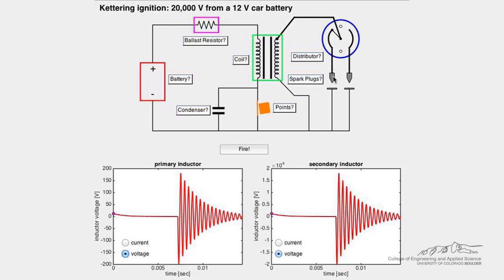This large voltage is what drives the spark across each one of the spark plugs. Click the fire button to animate the schematic and observe the voltage and current across the primary and secondary inductors.